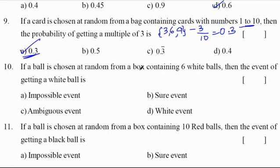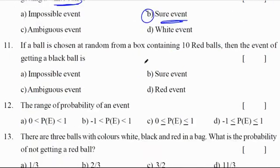If a ball is chosen at random from a box containing 9 white balls, what is the probability of getting a white ball? White balls are 9, only white balls. This is a compulsory white ball, so probability is 1 and it's a sure event. If a box contains 10 red balls, the probability of getting a black ball is 0, an impossible event.